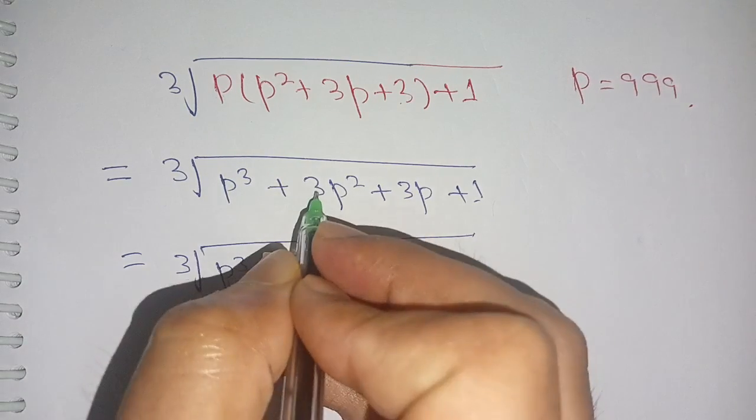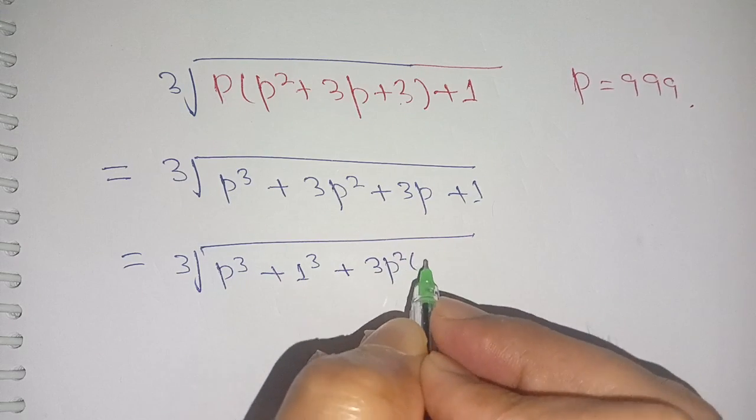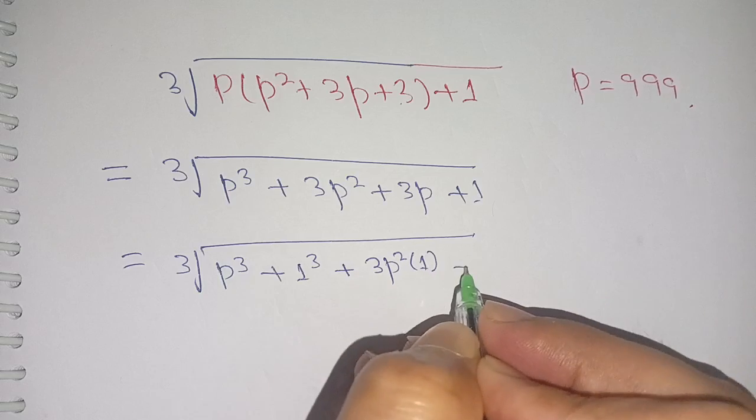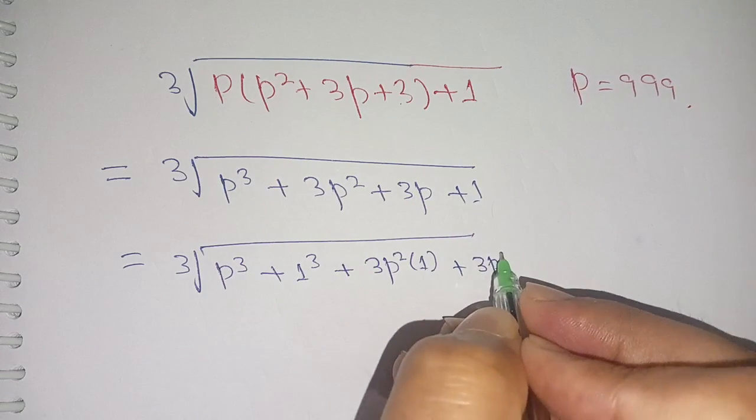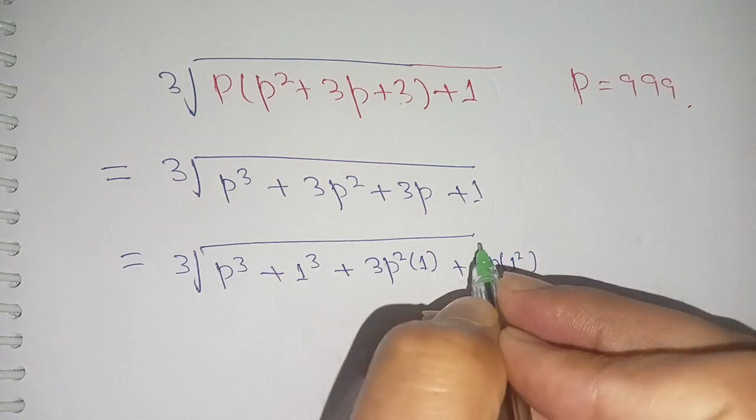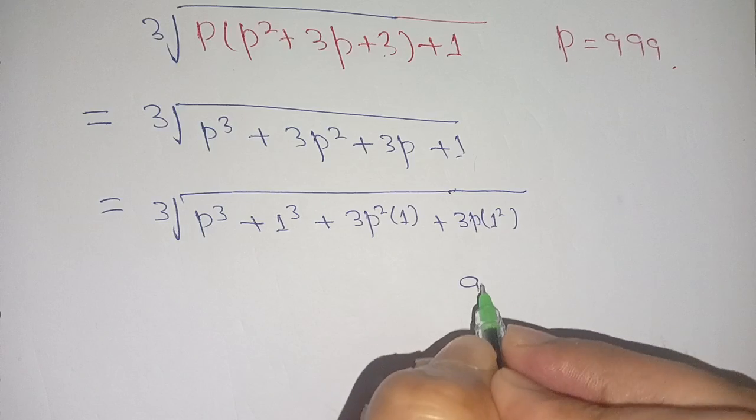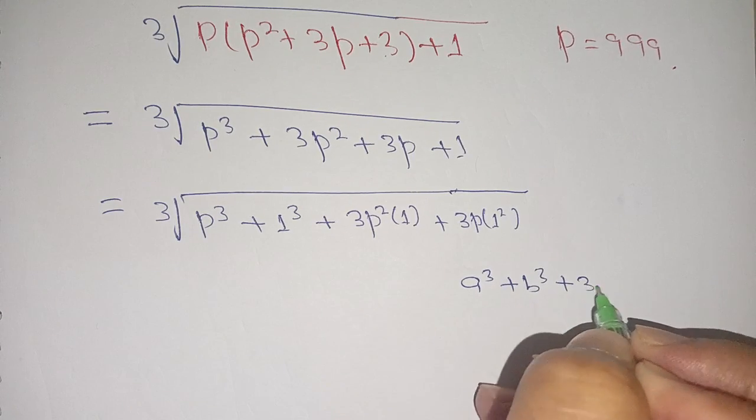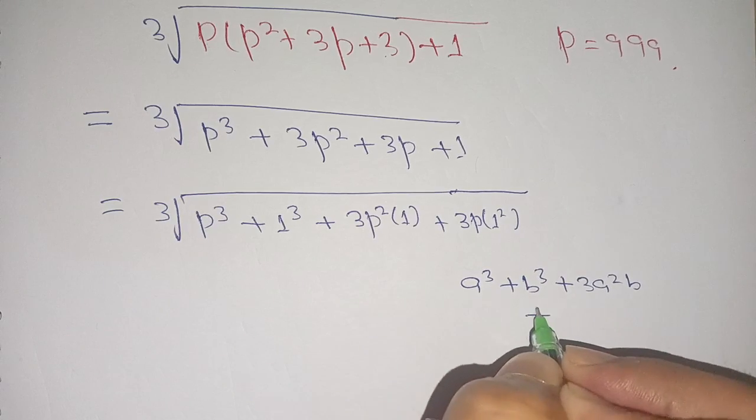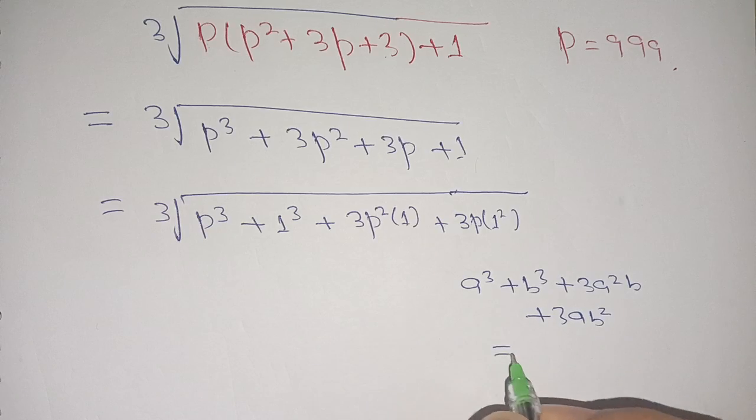Plus 3p² can be written as 3p² times 1, plus 3p can be written as 3p times 1². And we know that a³ + b³ + 3a²b + 3ab² is equal to (a + b)³.